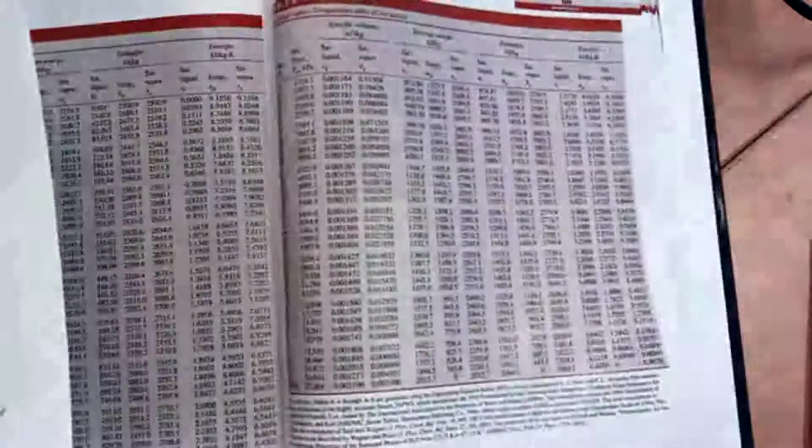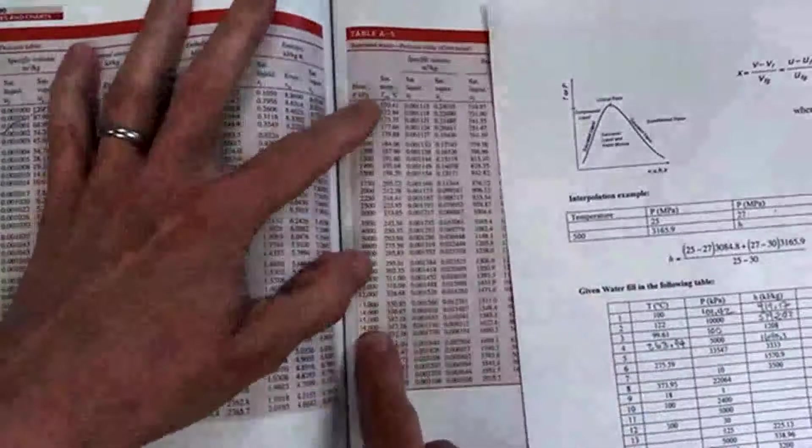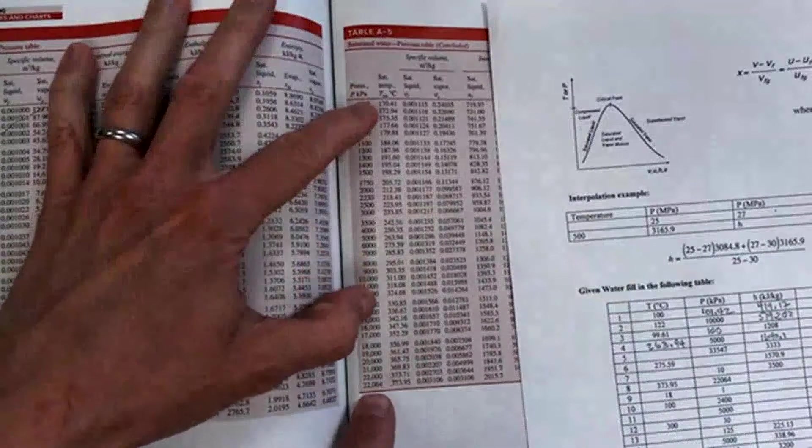So in order to find this state, I'm going to do what I always do. I'm going to start with the saturated tables and I'm going to go to the table where pressure is in the first column. That's the second table. And I'm going to scroll on down until I get to that pressure. Whoa.